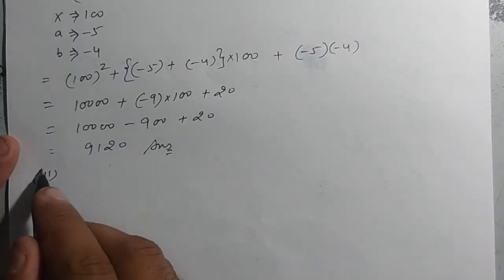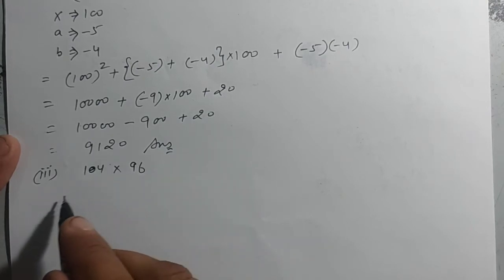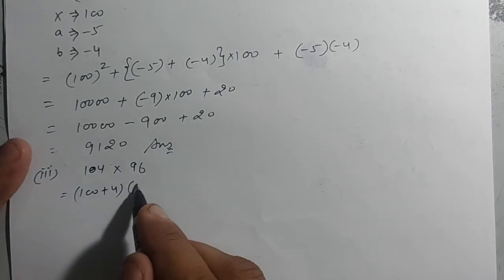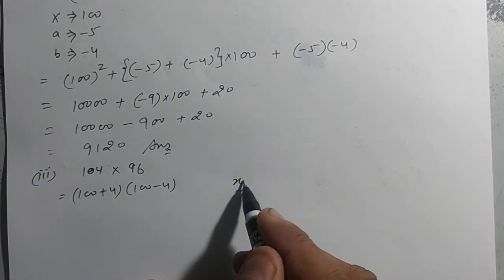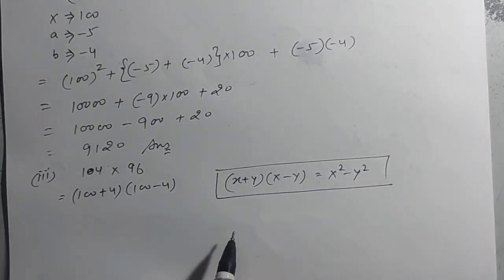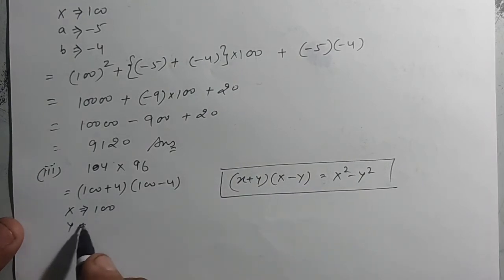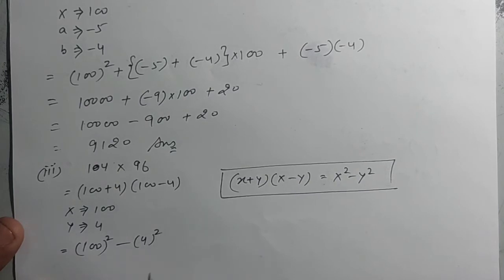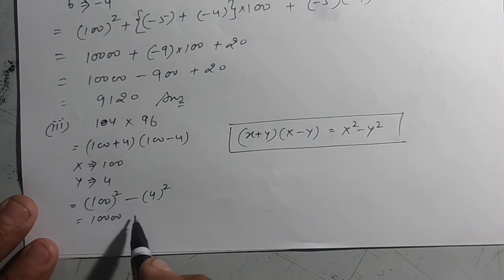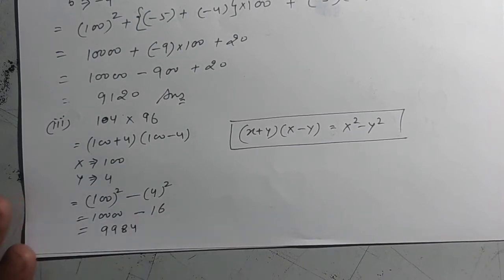Third part: 104 × 96. यह हो जाएगा (100 + 4)(100 − 4). इसमें दूसरी identity लगेगी: (x + y)(x − y) = x² − y². यहाँ x = 100 और y = 4. तो: 100² − 4² = 10,000 − 16 = 9,984. यह आपका answer आ जाएगा।